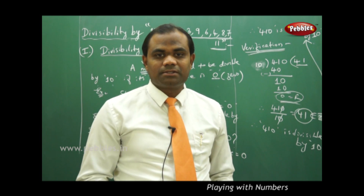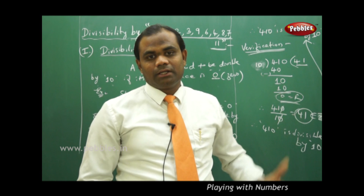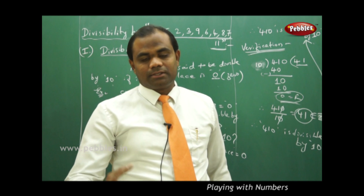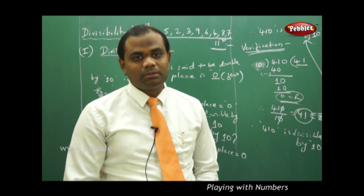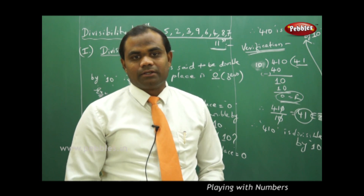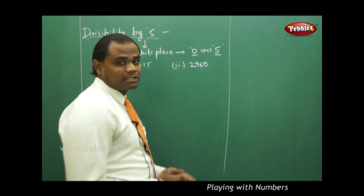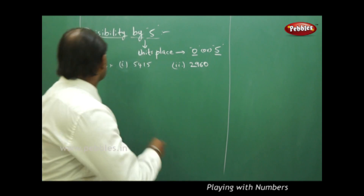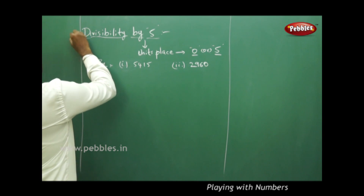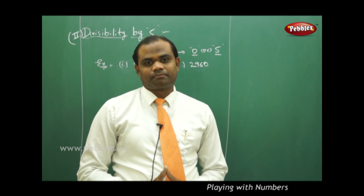This is how we identify divisibility by 10 using the unit's place. If the unit's place is 0, the number is divisible by 10. If the unit's place is not 0, the number is not divisible by 10. Now let's look at divisibility by 5, the second method.